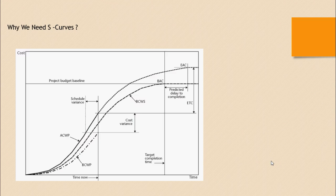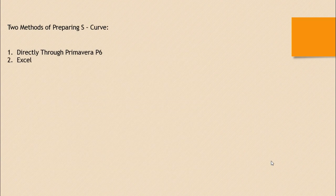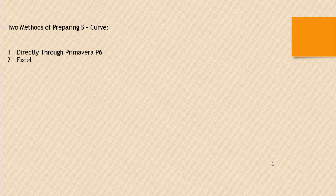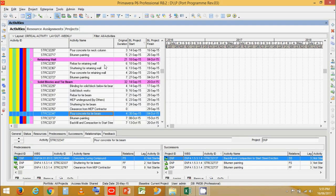Why do we need S-Curves? An S-Curve is an important project management tool which helps us visually track project progress plotted over a time scale — to identify growth or slippage, to know cost variance or performance variance, or any slippage that may occur, enabling the project management team to take quick remedial actions. We have two methods for preparing an S-Curve: directly through Primavera, and through Excel.